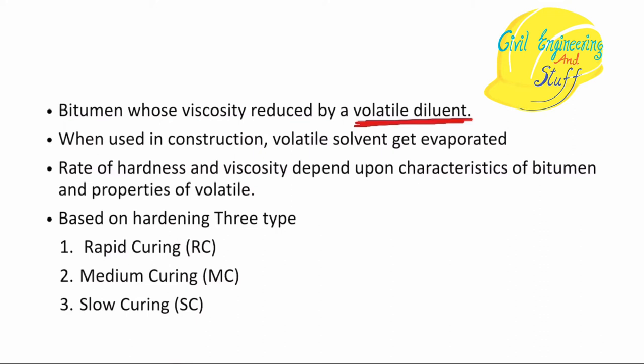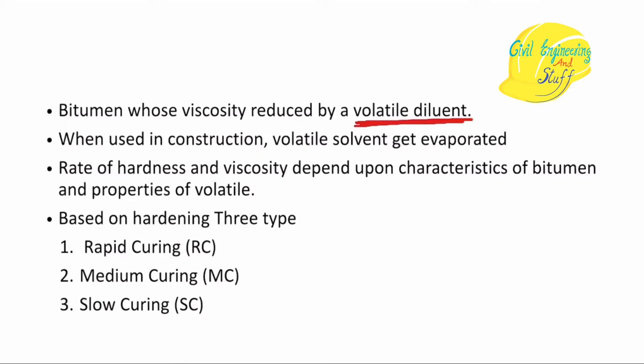Conventional bitumen has to be first heated, then mixed at a certain temperature range with the aggregates, and then laid on the road at that temperature range. But what will happen if we are working in a colder region? Achieving the desired temperature becomes a very tedious task. In those scenarios, cutback bitumen proves to be very beneficial.